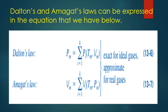Dalton's and Amagat's laws can be expressed mathematically as follows: Dalton's law states that the pressure of a mixture equals the sum of component pressures, with each component at the same volume and temperature as the mixture. Amagat's law states that the volume of a mixture equals the sum of component volumes, with each component at the same temperature and pressure. Both are exact for ideal gases and approximate for real gases.